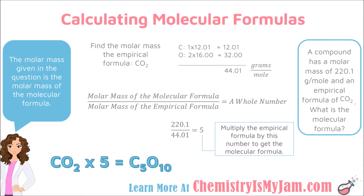So 44.01 is the bottom number in the equation. The top number, 220.1, was given in the problem. Dividing them gives a whole number of 5 — this is the number I multiply my empirical formula by. My empirical formula was CO2: 1 carbon times 5 gives 5 carbons, and 2 oxygens times 5 gives 10 oxygens in the molecular formula. This equation tells you what to multiply your empirical formula by to get your molecular formula.